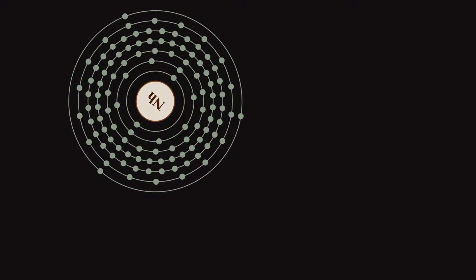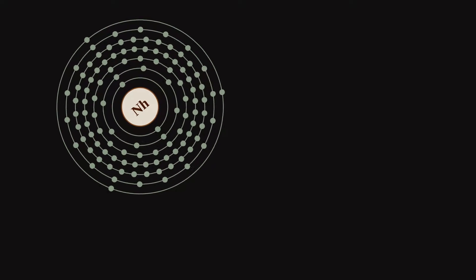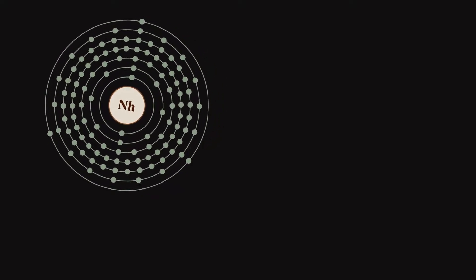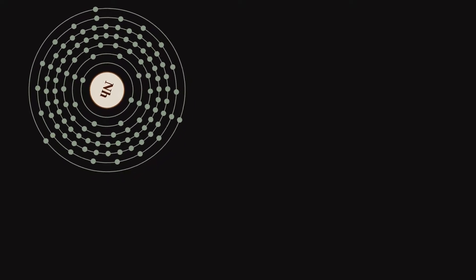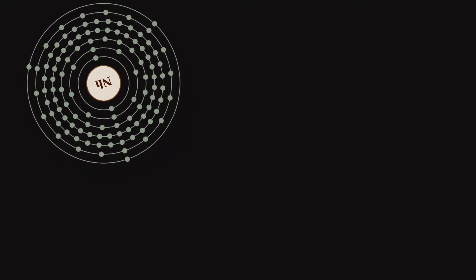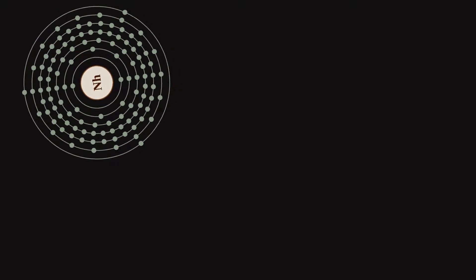It is a member of period 7 and group 13. Nihonium was first reported to have been created in 2003 by a Russian-American collaboration at the Joint Institute for Nuclear Research in Dubna, Russia, and in 2004 by a team of Japanese scientists at Riken in Wako, Japan.